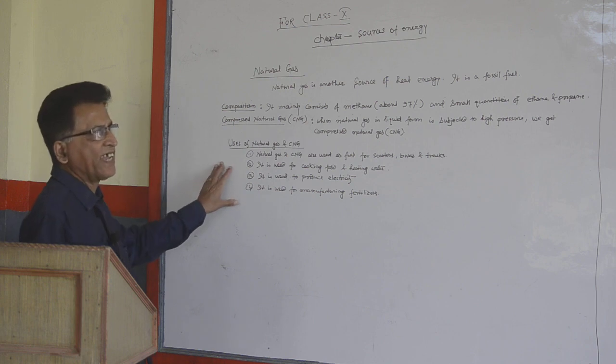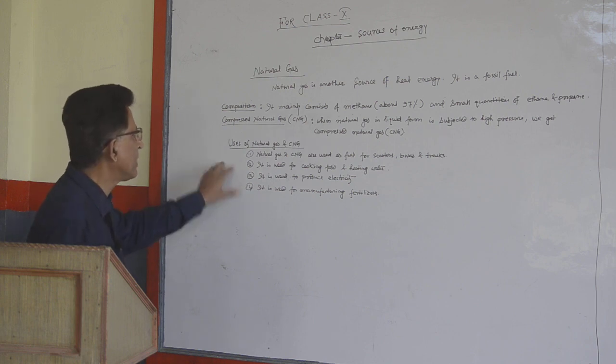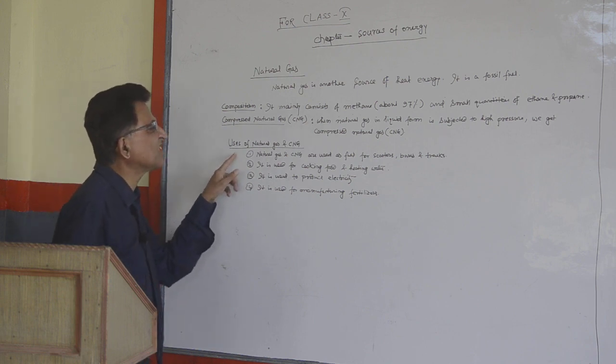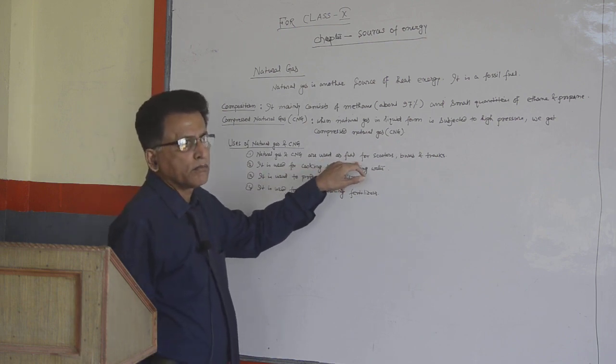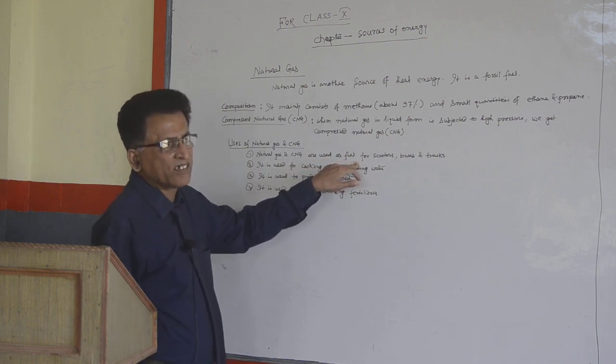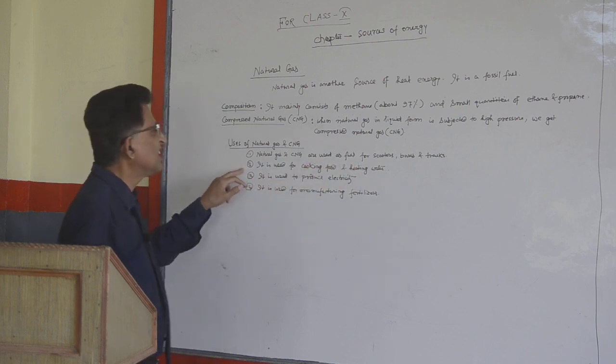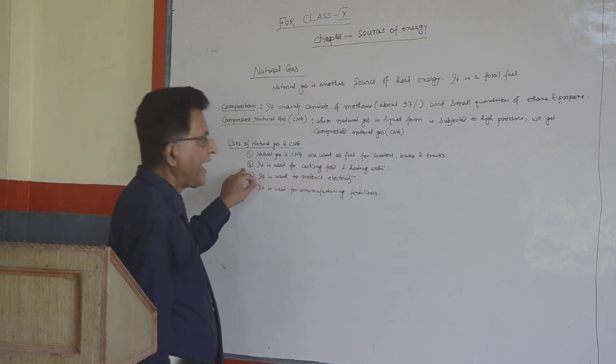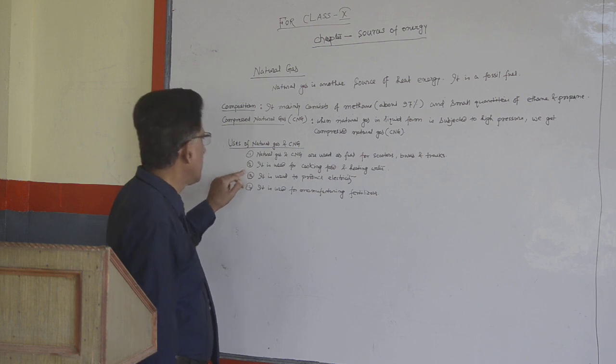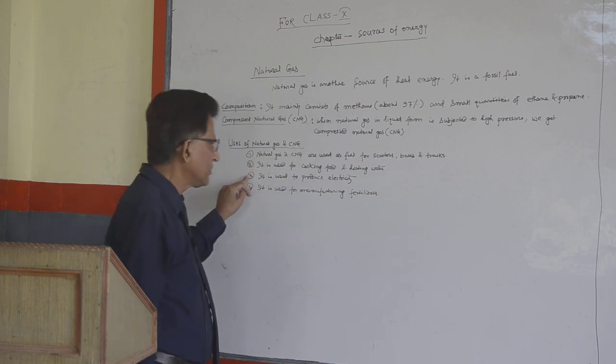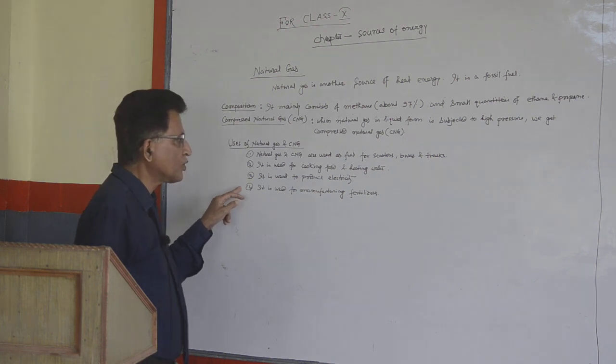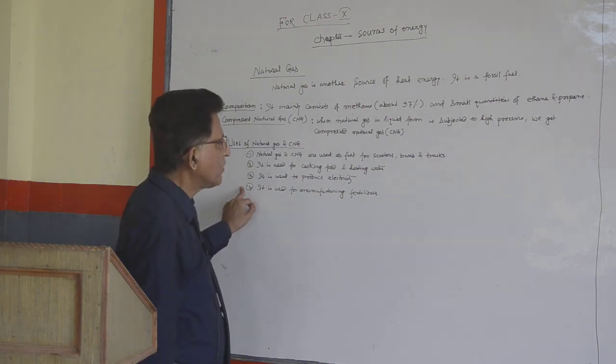Uses of natural gas and CNG. Number 1, natural gas and CNG are used as fuel for scooters, buses and trucks. Number 2, it is used for cooking food and heating water. Number 3, it is used to produce electricity. Number 4, it is used for manufacturing fertilizers.